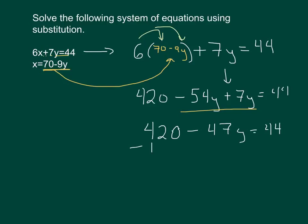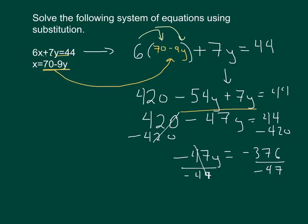Now I am going to get rid of my 420, so I subtract 420 from both sides. And these cancel out, and I get negative 47y is equal to 44 minus 420 is negative 376. And now I'm going to divide both sides by negative 47. Divide this side by negative 47. It's going to make these cancel out. And what we're going to have here is we are going to get y is equal to negative 376 divided by negative 47 is a positive 8.